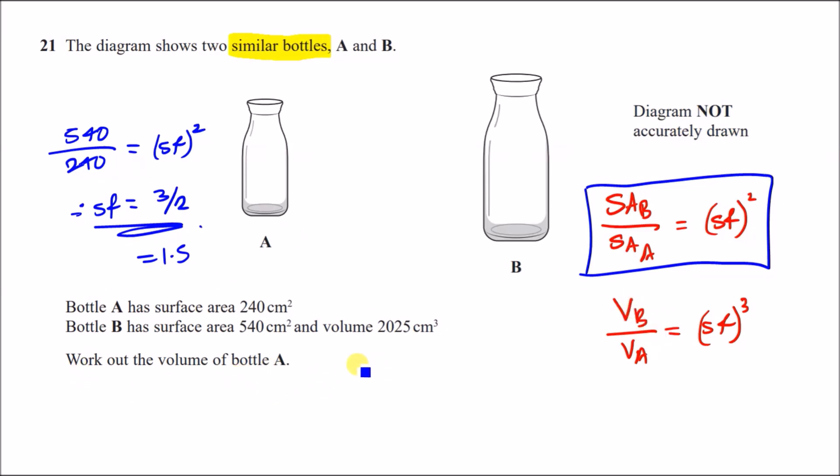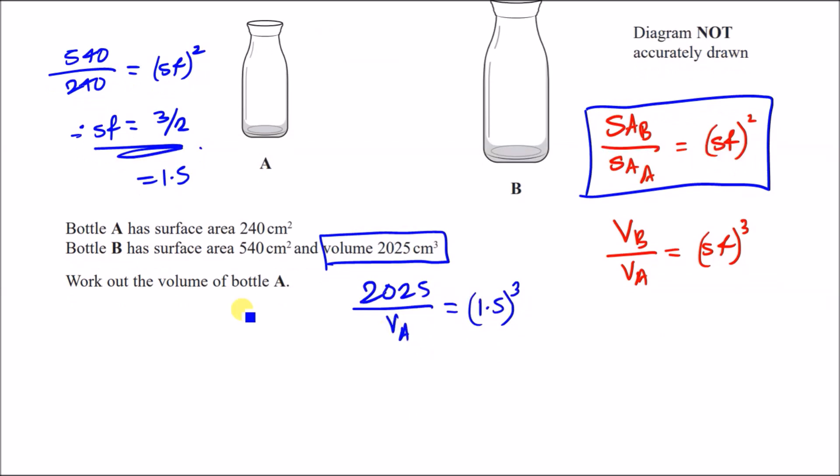Now to work out the volume a, we use the same formula. So plug everything back in. Since we've got the volume of b, we can say the volume of b is 2025 over the volume of a is what we want, must equal that scale factor 1.5 to the power of 3. And all you do is just make VA the subject. So you're going to have 2025 over 1.5 cubed equals VA. And when you put this in the calculator, you should just get a straight up answer of 600 centimeters cubed. And that's it, guys.